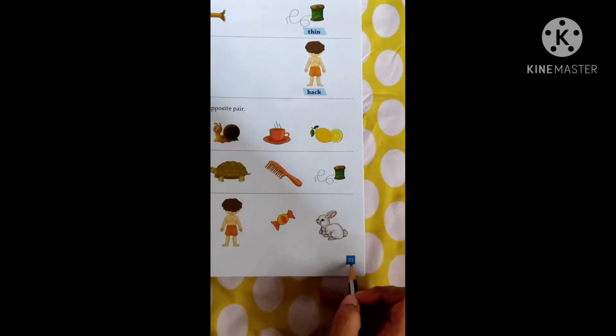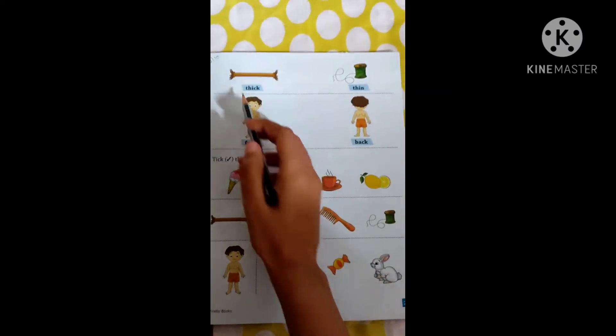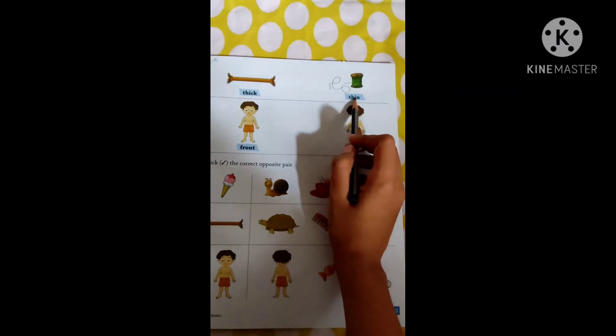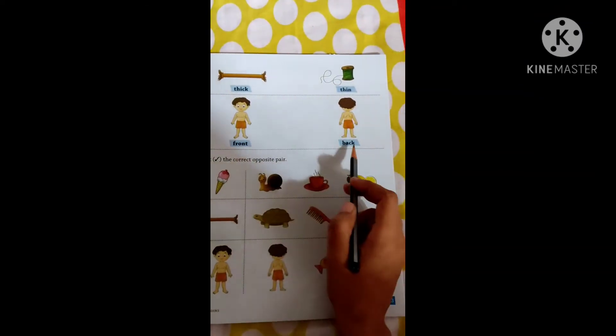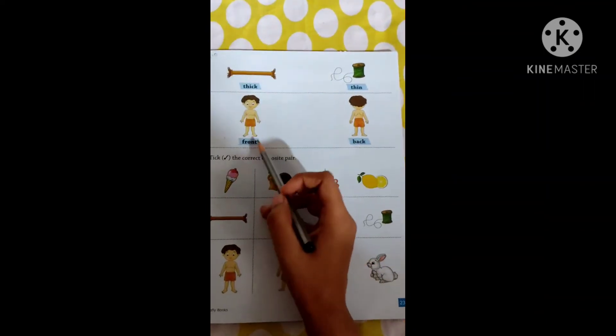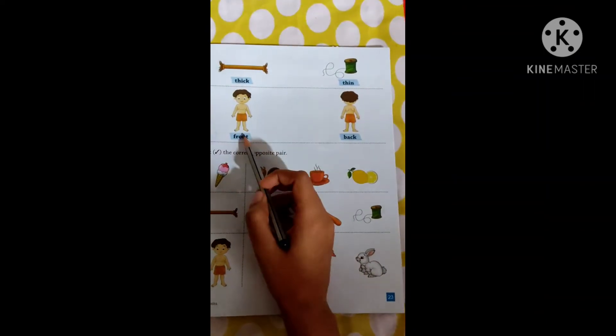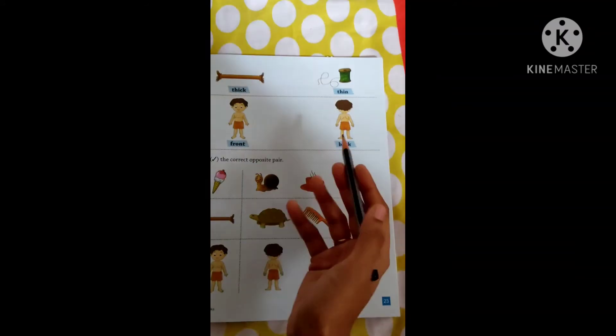Now come to page number 23. Thick, thin. Front, back. Now the boy is standing like this, so it shows his front, back. Opposite words.